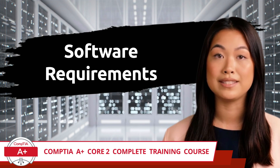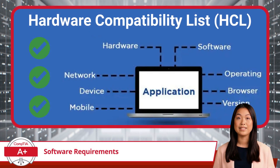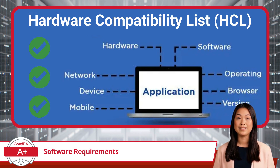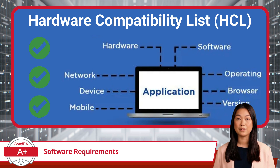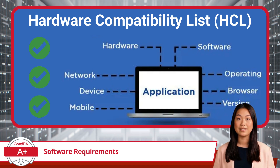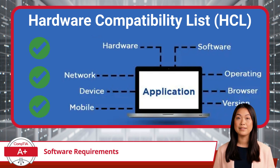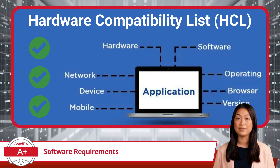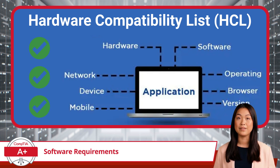Software Requirements. With any software installation, be it an operating system or an application, having a foundational knowledge of the hardware that will be supporting the software is a crucial first step. At the core of any software installation process is the Hardware Compatibility List, or HCL for short. The HCL serves as a detailed guide provided by software vendors, listing all the hardware components and systems that have been tested and verified to be compatible with their software.